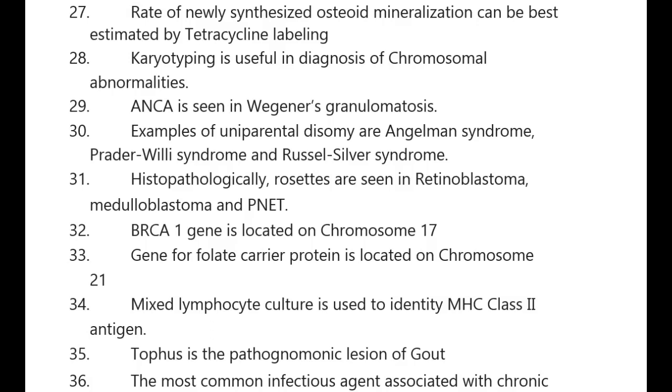Examples of uniparental disomy are Angelman syndrome, Prader-Willi syndrome, and Russell-Silver syndrome. Histopathologically, rosettes are seen in retinoblastoma, medulloblastoma, and pineoblastoma.